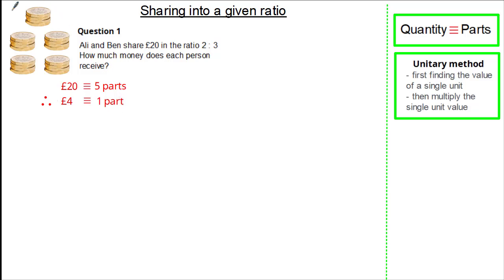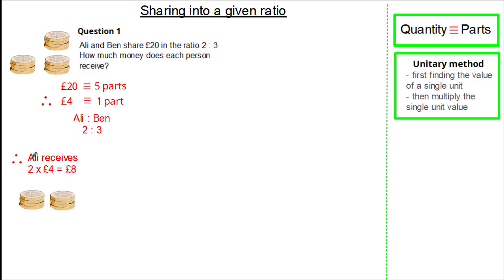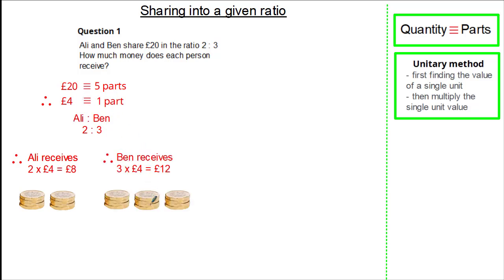You can see how our £20 has been split equally into 5 parts where each part is £4. In the question, Ali receives 2 parts and Ben receives 3 parts. We know 1 part is equivalent to £4. So Ali gets 2 times £4, which is £8. Ben receives 3 parts, and 3 times £4 is £12.